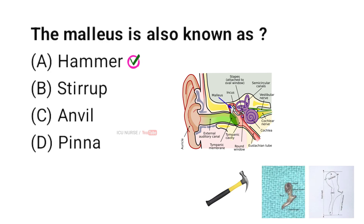The malleus is also called the hammer because its shape looks like a hammer. It is one of the three small bones in the middle ear. The malleus is attached to the eardrum and passes sound vibrations to the next bone, the incus. Its hammer-like shape is the reason for its name.